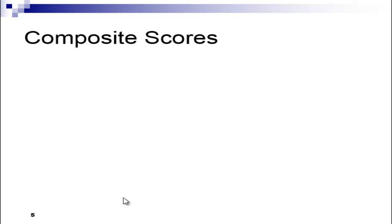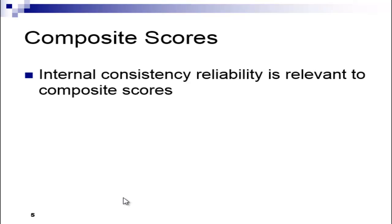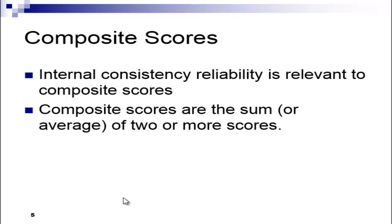When I say scores, in the context of Cronbach's alpha that means composite scores. Internal consistency is only relevant to composite scores, which are the sum — or average — of two or more scores. When you're adding scores together and analyzing data based on those sum scores, those are technically referred to as composite scores. Internal consistency reliability is relevant to those composite scores, not the individual item scores.